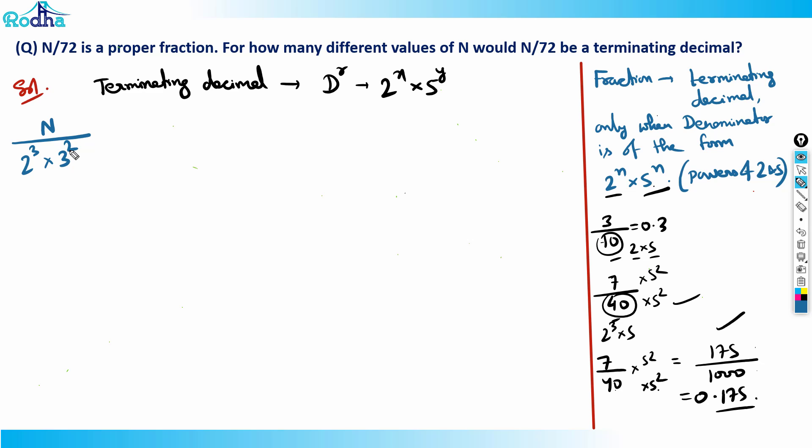Obviously, N should cancel 3². If I want this to be a terminating decimal, N should cancel 3² such that only, for example, 1/8 is left. So 1/8 is terminating because I can change it to the nearest power of 10.